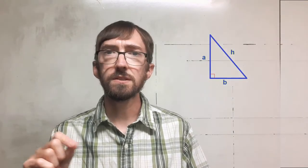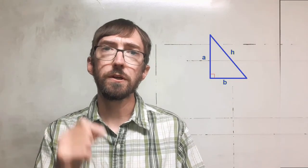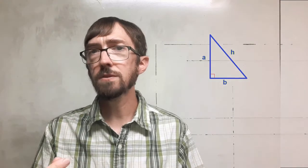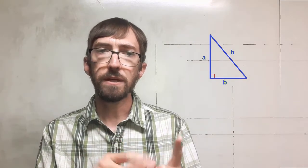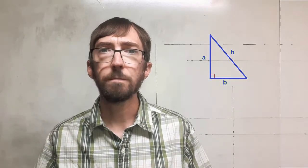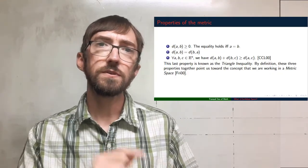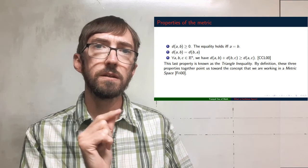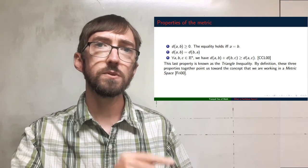You can easily see this with a generic right triangle — the base and height added together are greater than the hypotenuse. The inequality includes equality as a possibility, which is the case for a degenerate triangle that essentially lies along a line and will look like a line segment.